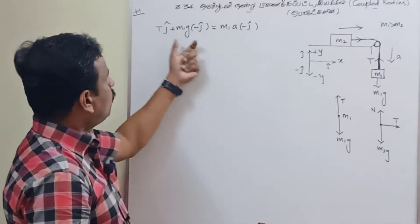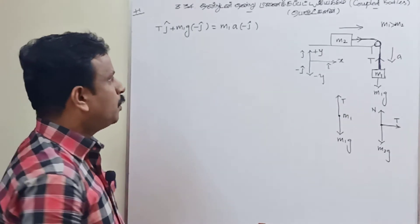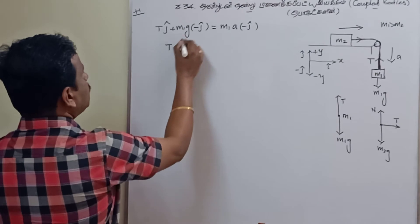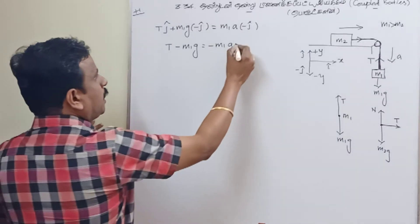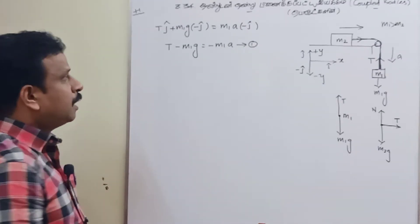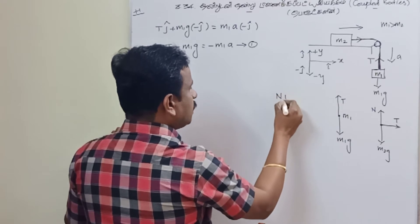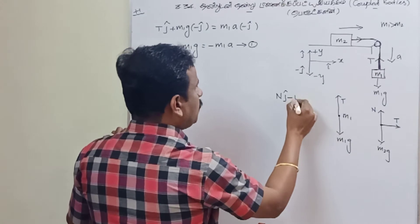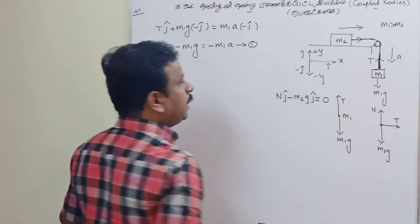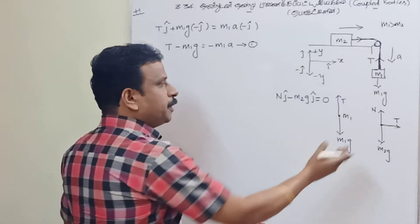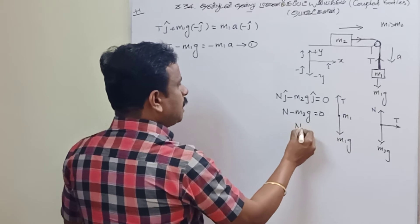For m1: tension T is along the positive y-axis and m1·g is along the negative j-axis, giving downward acceleration, so the equation is T minus m1·g equals minus m1·a. That is Equation 1. For the vertical direction of m2 on the table: N·(j) minus m2·g equals zero, because there is no vertical movement and no vertical acceleration.